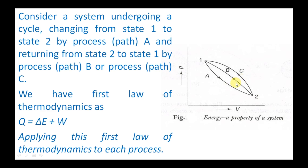We first consider the return through path B, and later through path C. Together, path A (1→2) and path B (2→1) constitute one cycle. Similarly, path A and path C together constitute another cycle. For each process, we apply the first law of thermodynamics to prove that energy is a property of the system.